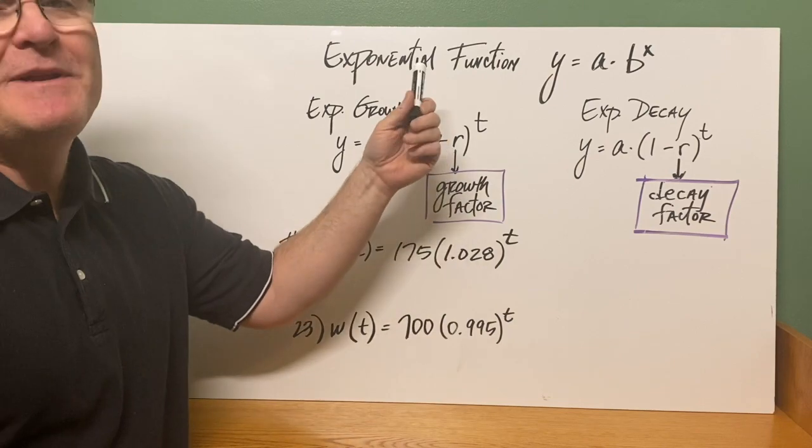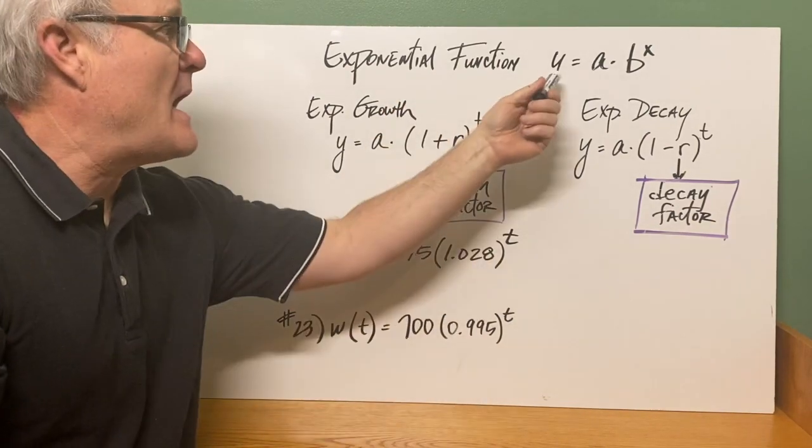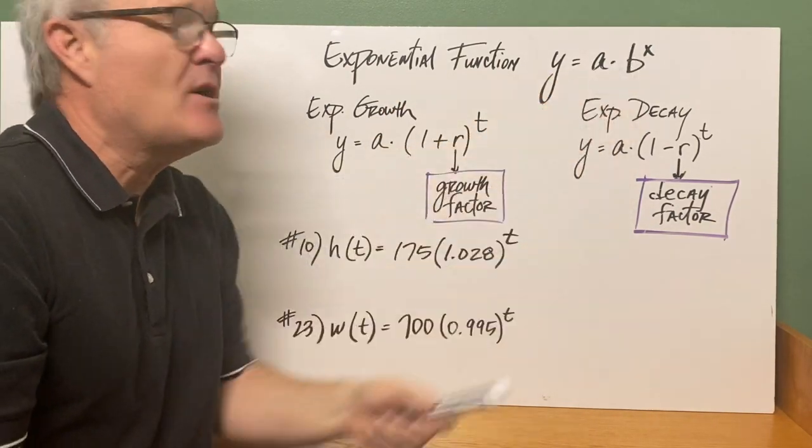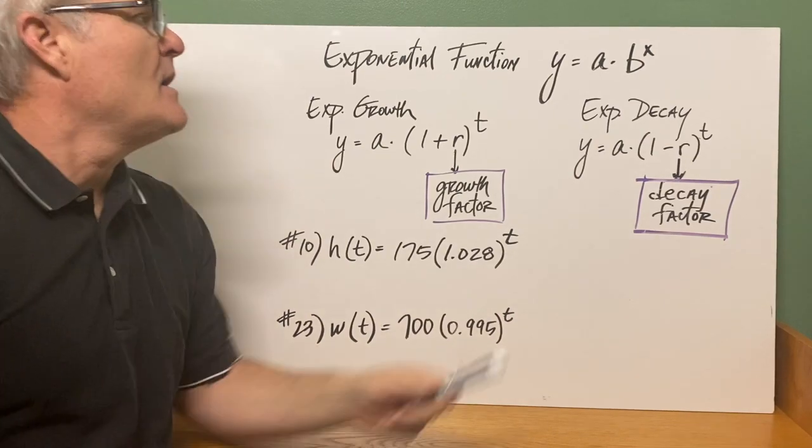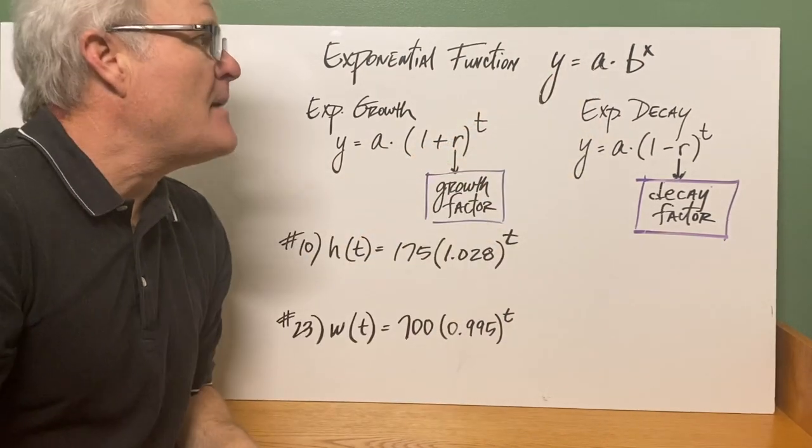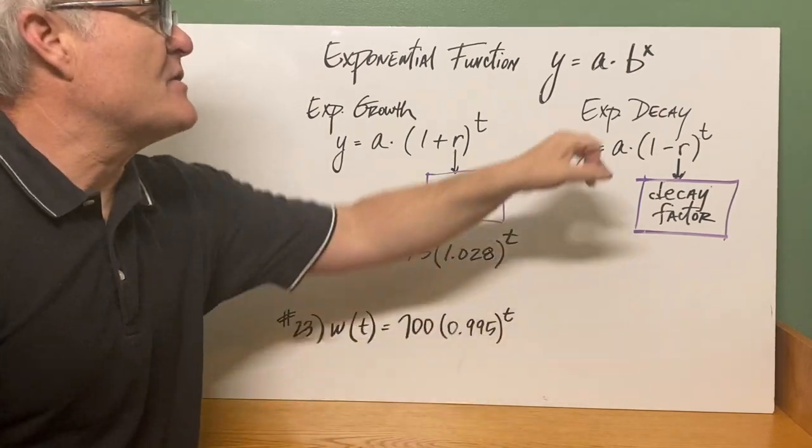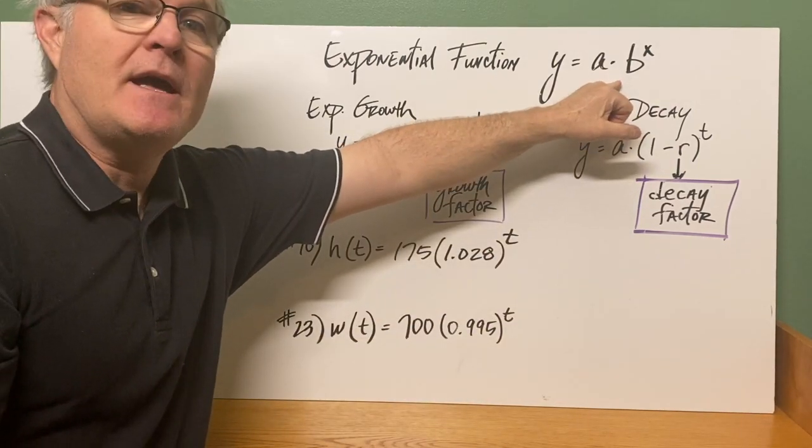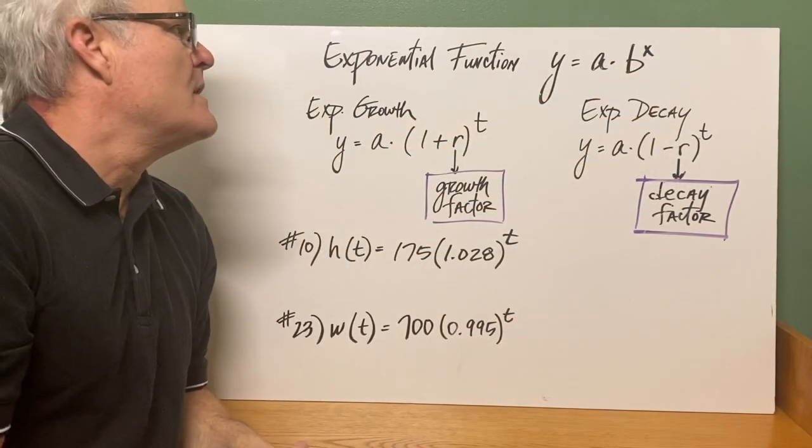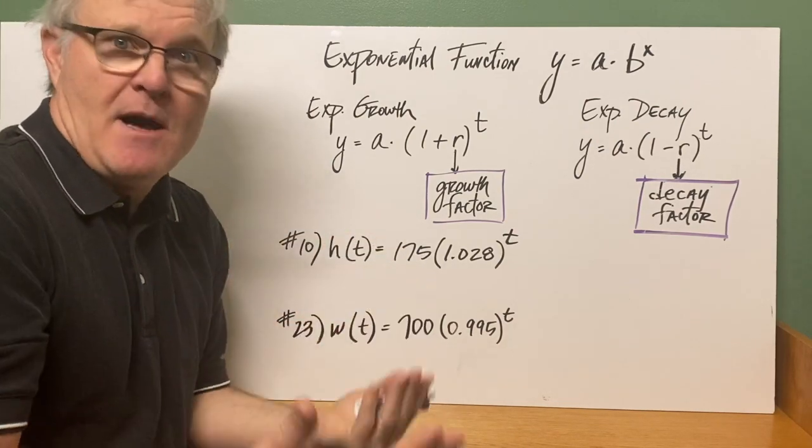In class, remember when we did exponential functions, it was y equals a times b raised to the x power. y was your output, a was the initial amount, b was either growth or decay, and x was how often it was raised to the power or compounded.